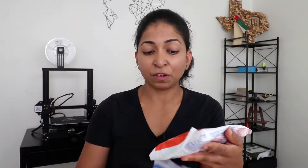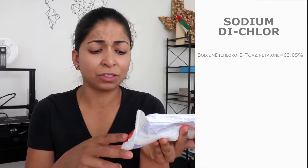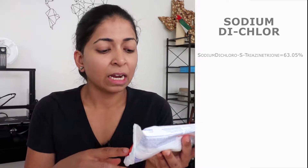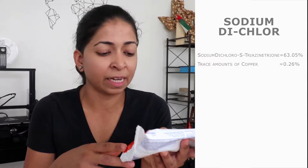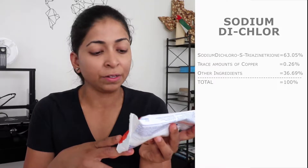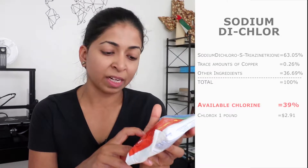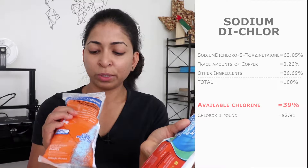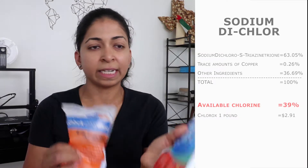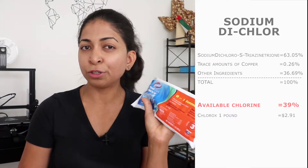The first I'm going to talk about is sodium dichlor. Pool Time and Clorox are the most popular brands — they both have the same ingredients, they just differ in price. The active ingredients are sodium dichlor S-triazinetrione at 63.05%, trace amounts of copper at 0.26%, and other ingredients at 36.69%, totaling 100%. The available chlorine is 39%. One pound of Pool Time at Home Depot is $4.98, and one pound of Clorox purchased in bulk at Costco comes to around $2.91 per pound.